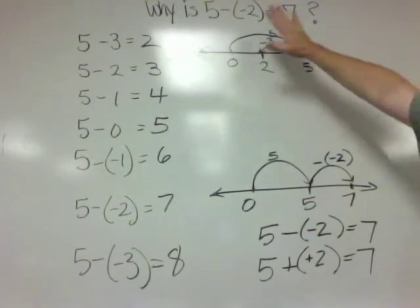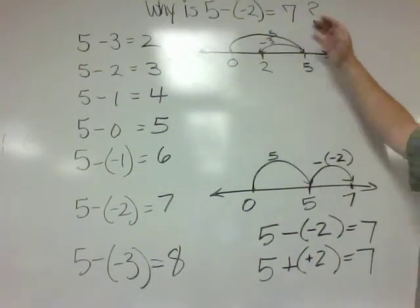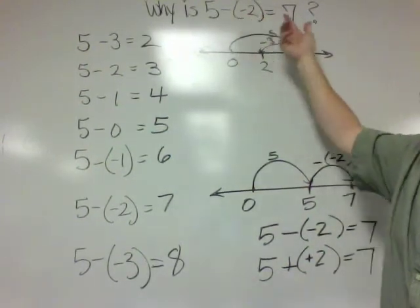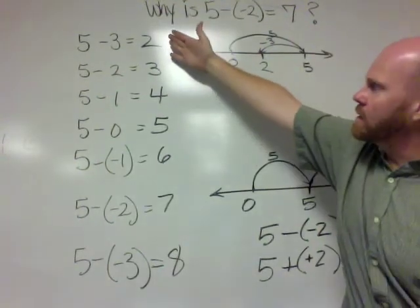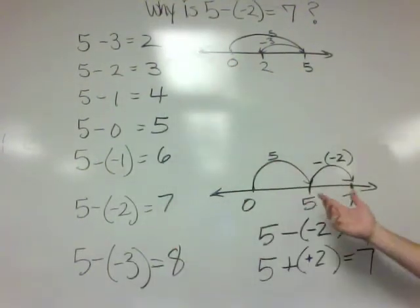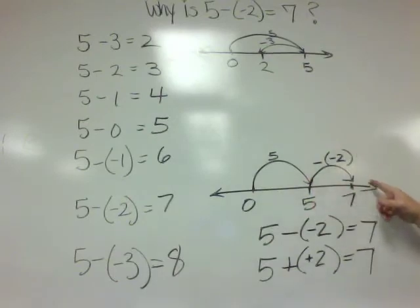But the big point is, why is 5 minus negative 2, 7? Why can we subtract something and get a bigger answer? Two reasons. One, because the pattern says so. And over here, because the number line says so.